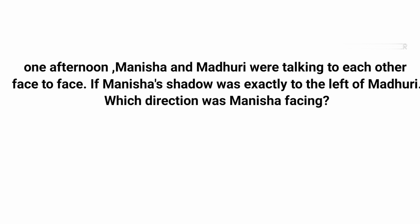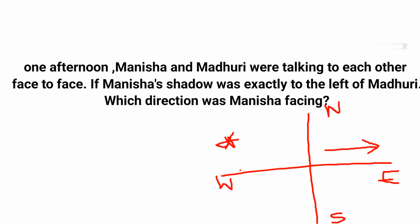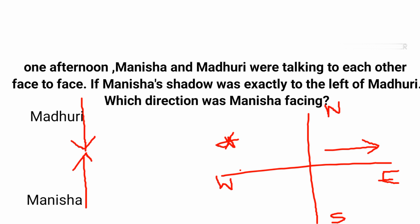Problem 2: One afternoon, Manisha and Madhuri were talking face to face. If Manisha's shadow was exactly to the left of Madhuri, which direction was Manisha facing? In the afternoon, the sun is in the west, so the shadow forms in the east. Suppose Manisha is facing north — her shadow is towards the east. Since they face each other, Madhuri faces south, and Manisha's shadow would be to Madhuri's left. So Manisha is facing north.